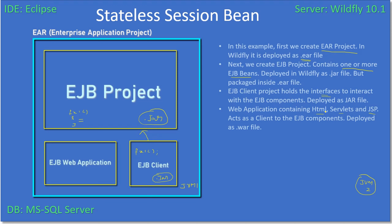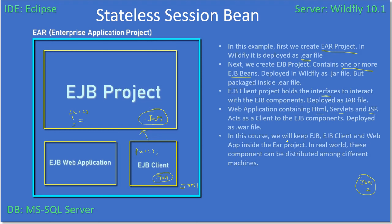The web application contains HTML, servlets, and JSP, and acts as the client. The enterprise application project is a big package that contains the JAR file of the EJB project, the JAR file of the EJB client, and the web application that comes as a WAR file. All this gets deployed inside the EAR project as a single unit.